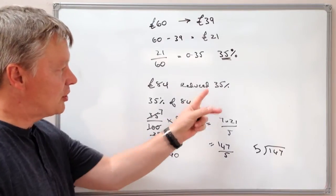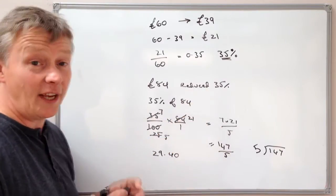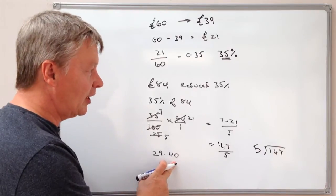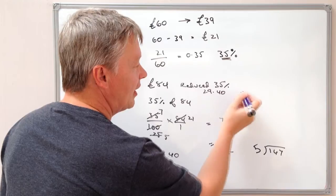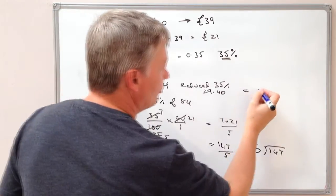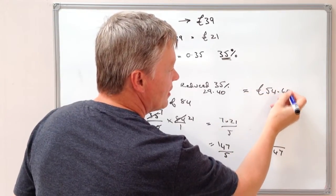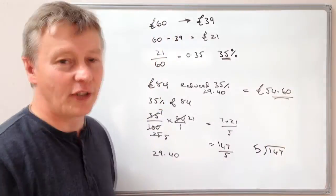And when I finish working that through, I'm actually going to get 29 pounds and 40p. Which means that the reduction of 35% is the same value as 29 pounds 40. So if it's reduced by 29 pounds 40, my new price will be 54 pounds 60.